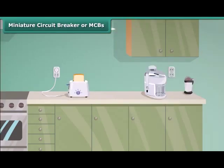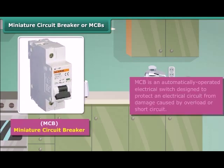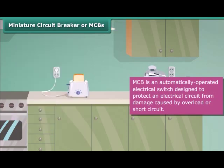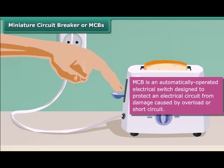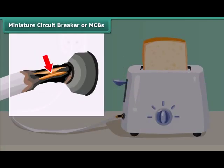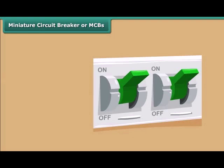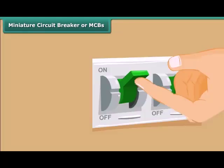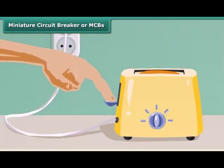A Miniature Circuit Breaker, or MCB, is an automatically operated electrical switch designed to protect an electrical circuit from damage caused by overload or short circuit. Whenever there is a fault in a circuit, the MCB interrupts continuity to discontinue electrical flow immediately. It can be reset to resume normal operation.